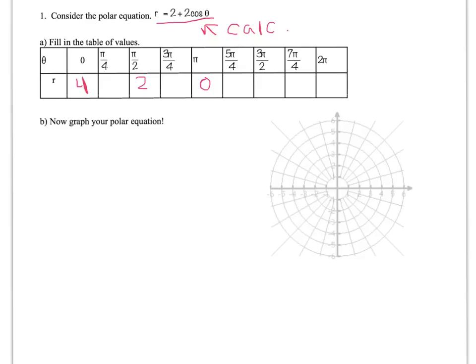3 pi over 2 is the same as pi over 2, because cosine of 3 pi over 2 is 0, so it's 2 plus 2 times 0. And, since 0 and 2 pi are the same, then those values are going to be the same.